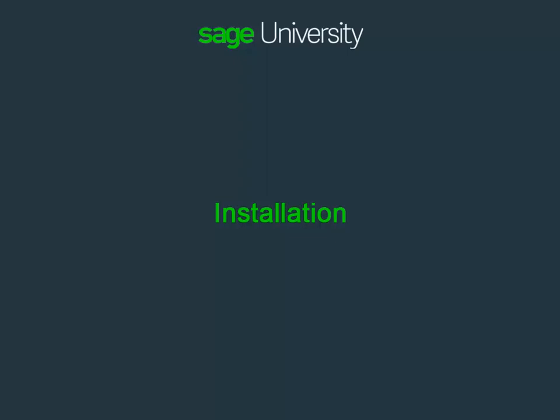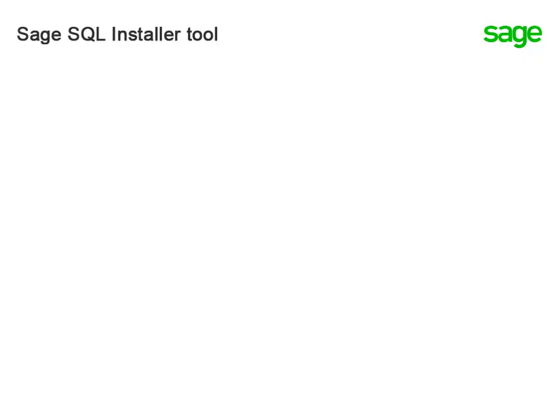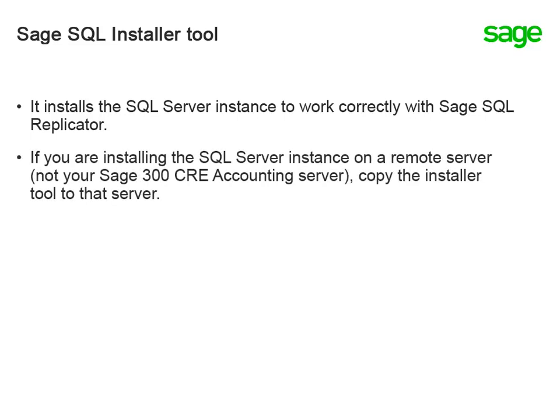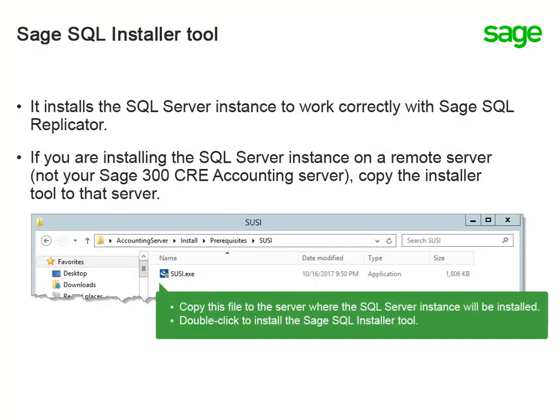Next, let's examine the installation process. SQL Replicator requires a dedicated instance of SQL Server, which you can install on your Sage 300 Construction and Real Estate Accounting Server or on a different server. Your Sage 300 CRE software comes with the Sage SQL Installer tool. We strongly urge you to use this tool to install the SQL Server instance so that it works correctly with Sage SQL Replicator. If you're installing the SQL Server instance on a server other than your Sage 300 CRE Accounting Server, install the Sage SQL Installer tool on that machine. You can do so by finding the suzy.exe file in the extracted installation files for Sage 300 Construction and Real Estate and copying that file to the server where you will install the SQL Server instance.